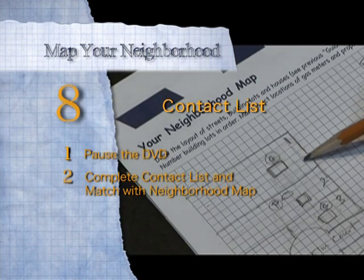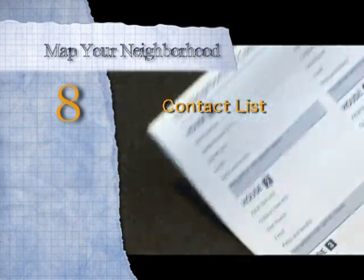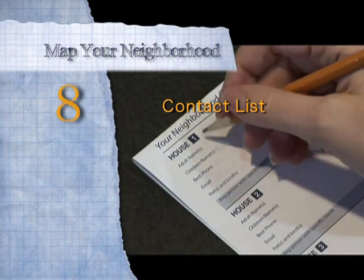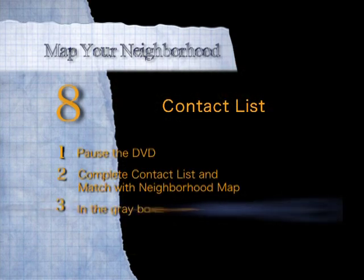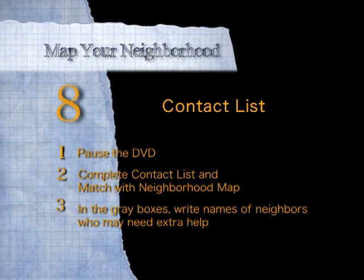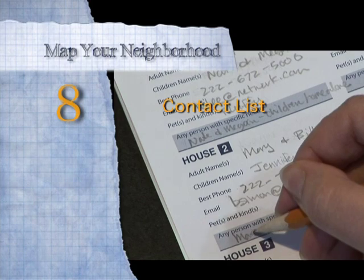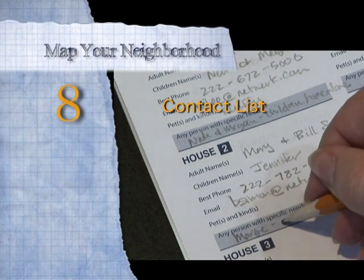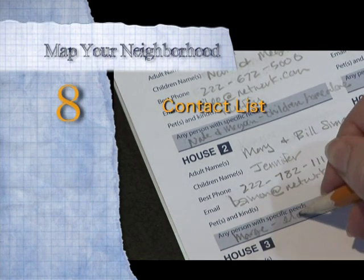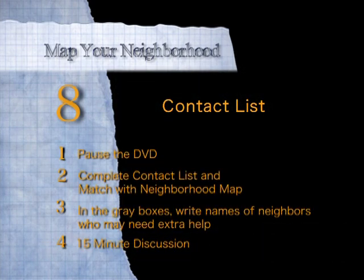Who lives in house number one? Write their names on the contact list. Do the same for the entire neighborhood. Finally, in the gray boxes, write the names of those who may need extra help during disasters. This includes neighbors who are elderly, neighbors with a disability, and children who may be home alone. You have 15 minutes to complete these tasks.